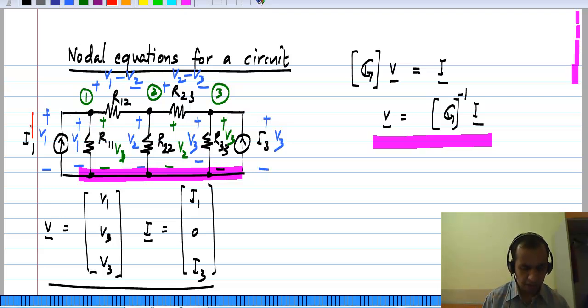So, if we take the current in I1 in this direction consistent with the passive sign convention given the sign of this V1, we will have this current to be minus I1, because this is the current source. And the current through R11 would be V1 times G11 and so on.